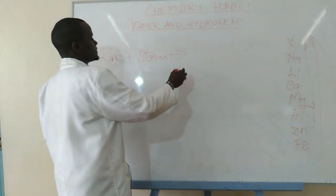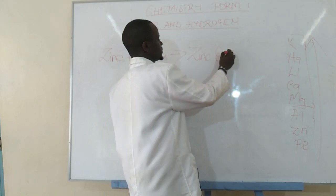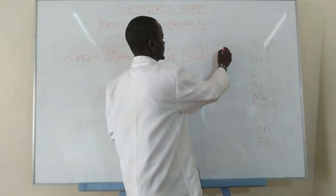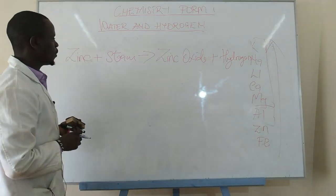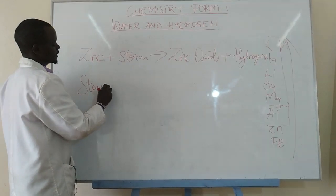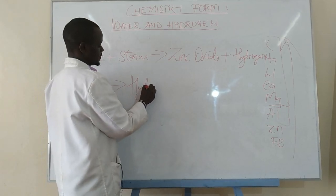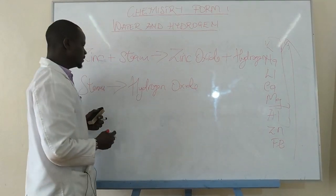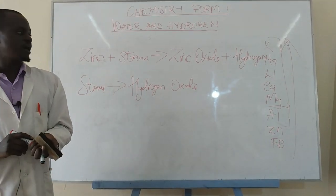Zinc does the same: it reacts with steam to give zinc oxide and a gas. Steam, which is water in vapor form — and water is hydrogen oxide — this time reacts as an oxidizing agent.